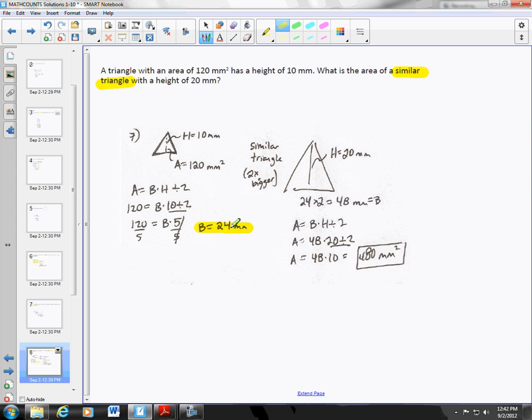So the new area, so this was the old base. So the new base is going to be double that. So double 24 is going to be 48. So now we have to figure out what the new area is. So you do 48 times 20 divided by 2. 20 divided by 2 is 10. 48 times 10 is 480. So if you notice, the area, the sides went up times 2, but 120 to 480, the area went up times 4.